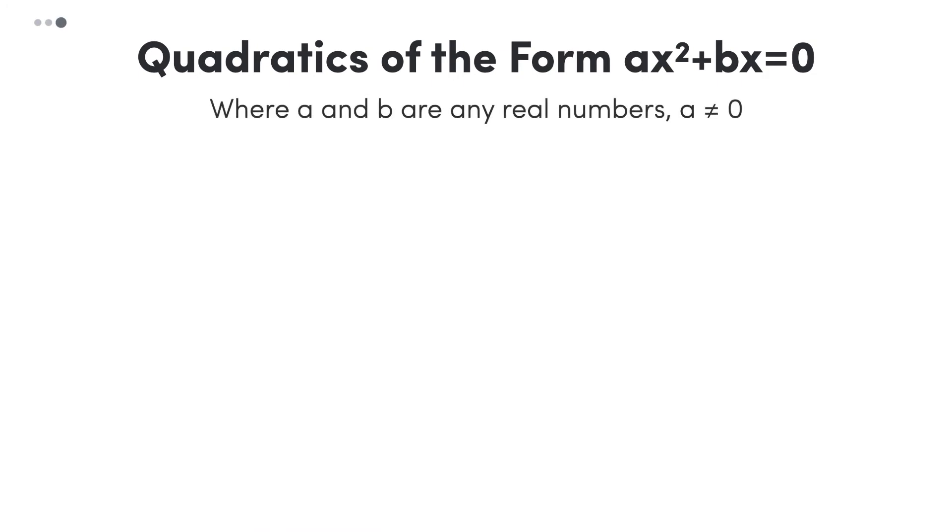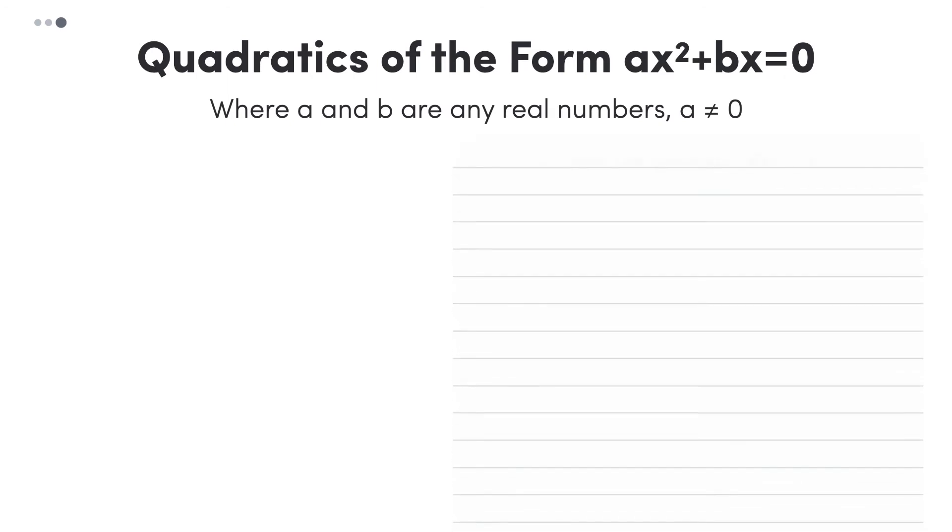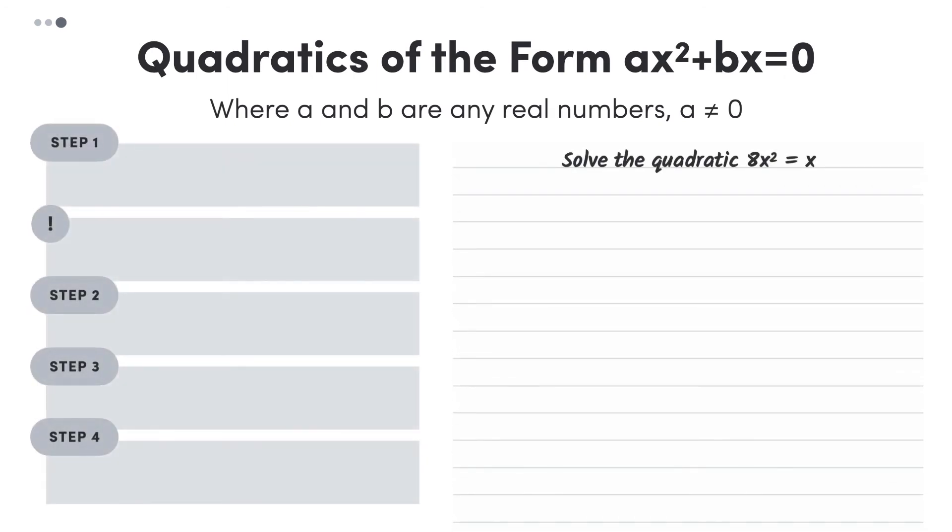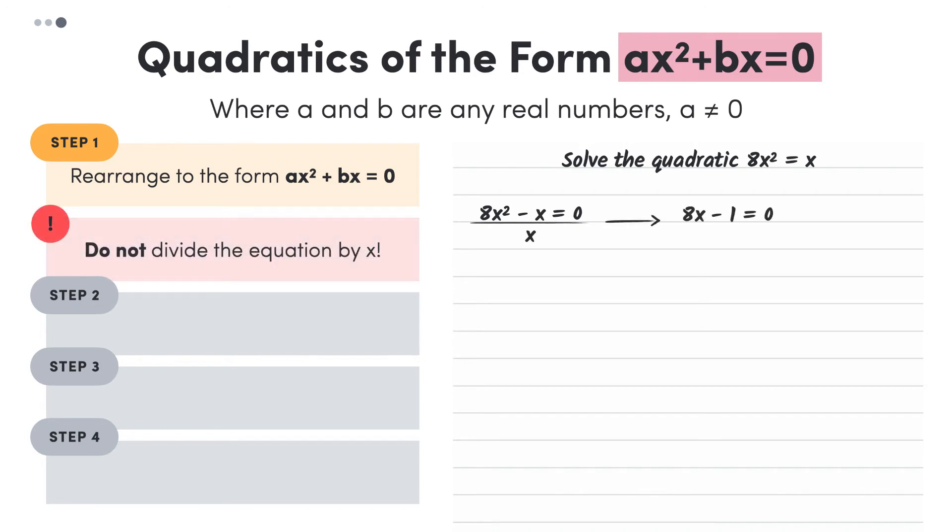Again, let's use an example to have something to apply the steps we developed to. Let's take the quadratic 8x squared equals x. Initially, this may not look as though it's in the form ax squared plus bx equals 0, so the first step is to rearrange the equation so it's in this form. Now, it may be tempting to divide the whole equation by x to get rid of the square and the x term, but this is a really common mistake to make.